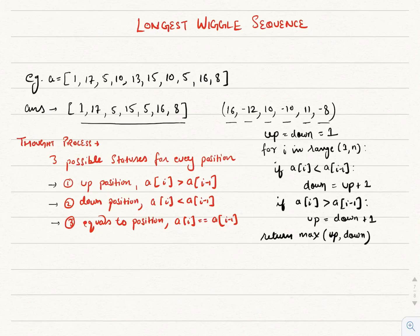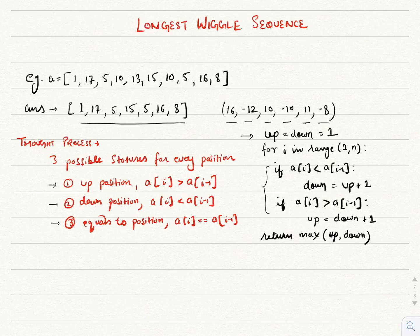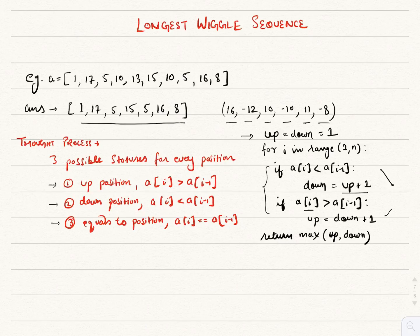We'll do a dry run of the given pseudocode. I've initialized up and down variables to one, because a sequence with fewer than two elements will always be a wiggle sequence. Now we'll loop from index one till the length of the array. If the next element is less than the previous element, that means we have gone from an up position to a down position, so we make down equal to up plus one. If the next element is greater than the previous element, we have gone up, so up will be down plus one. We'll do this until we reach the end of the array.